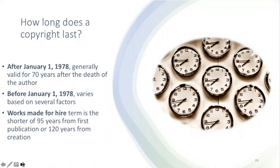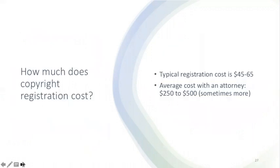After a copyright expires, the work enters what is called the public domain. Works in the public domain are free for use by anybody without compensation to the original copyright holder. Registering copyrights is relatively inexpensive compared to other IP tools such as patents and trademarks. With the assistance of an attorney, you can expect to pay anywhere from $250 to $500 or more for registration. If you decide to file without an attorney, the filing fees are $45 for a single work and $65 for works made for hire or joint-authored works.